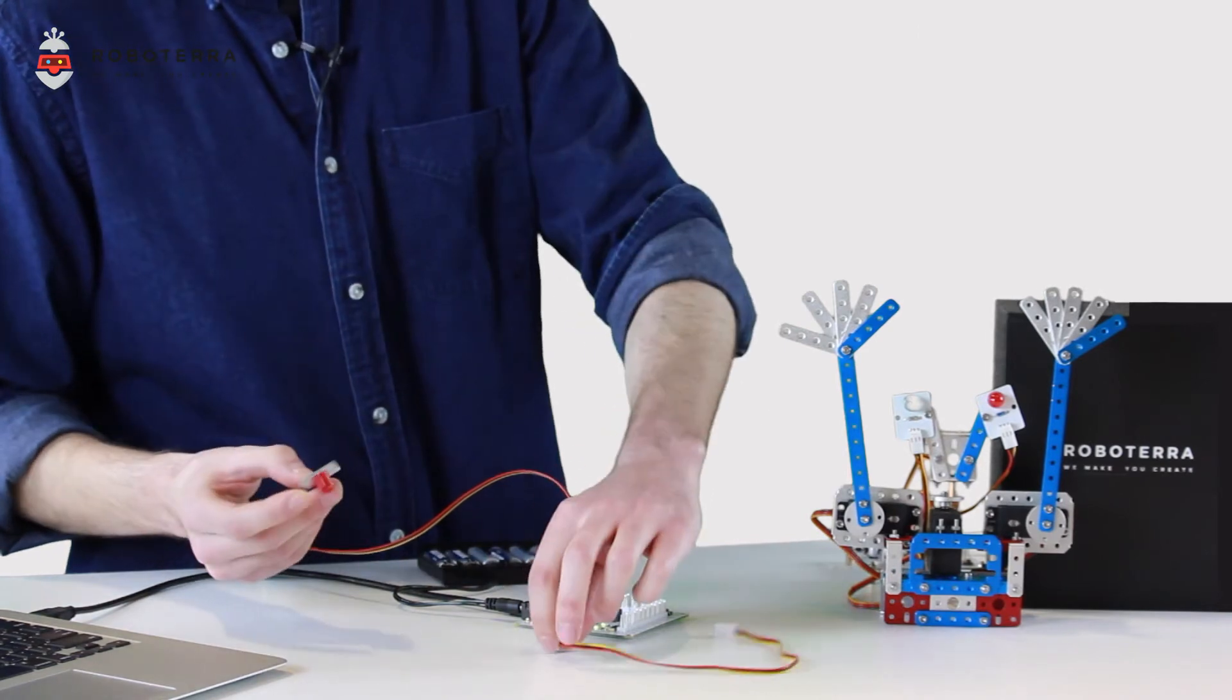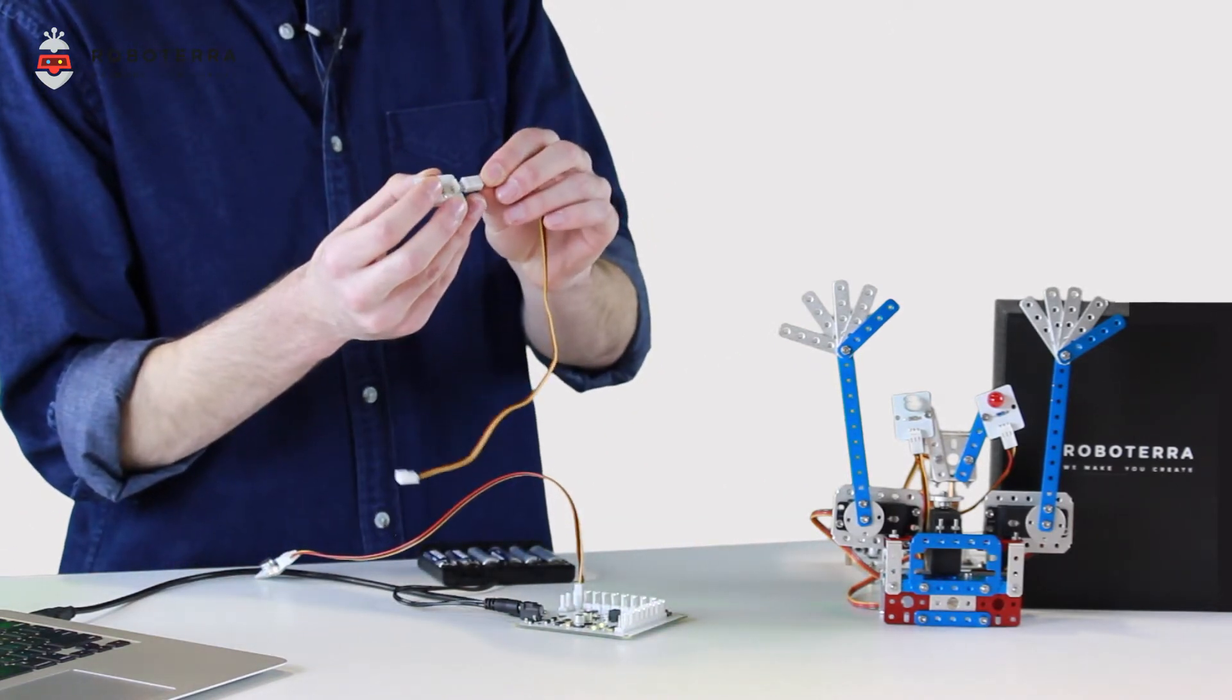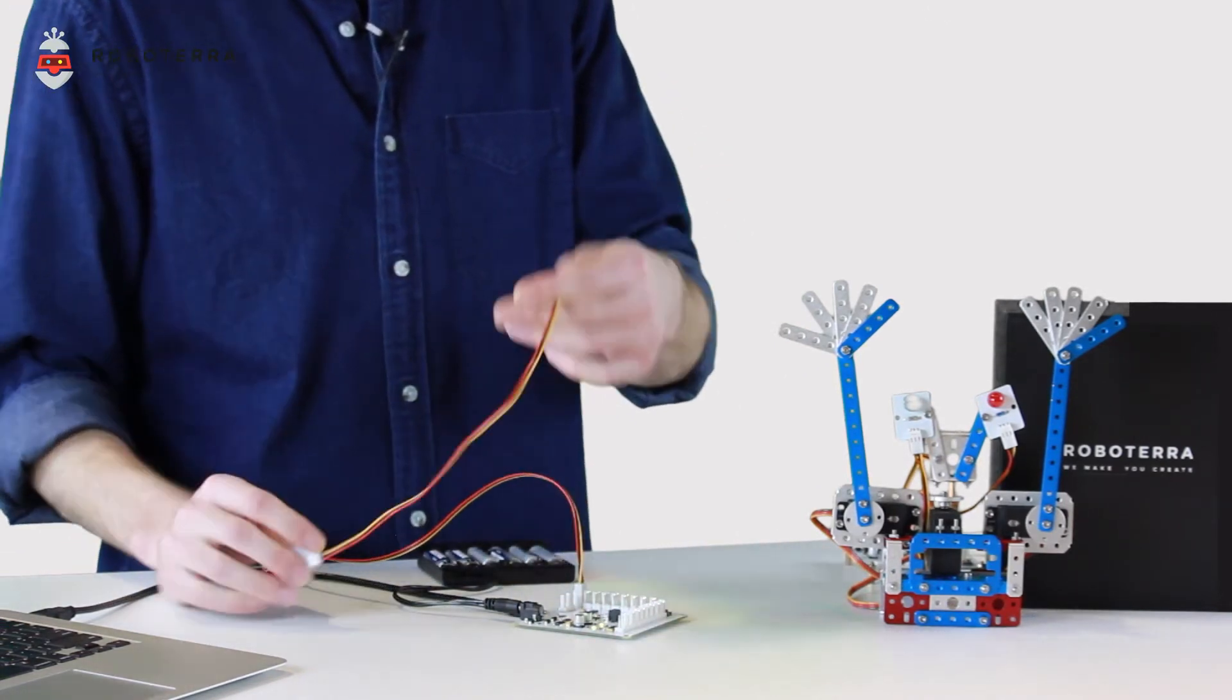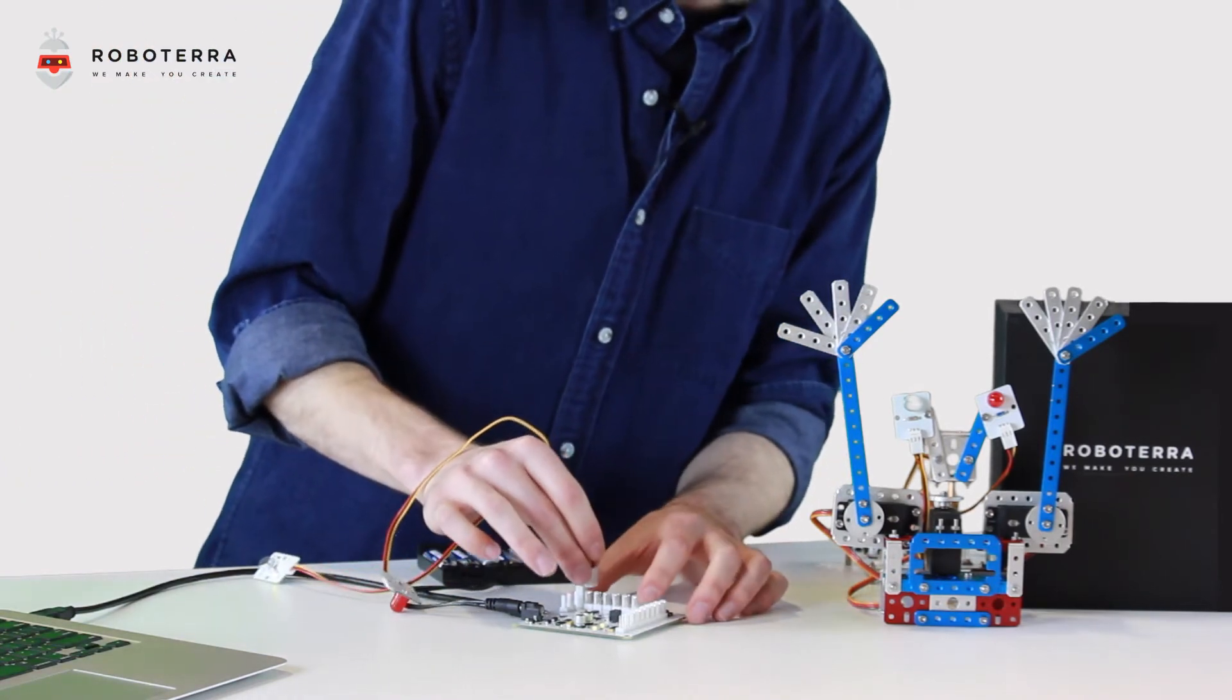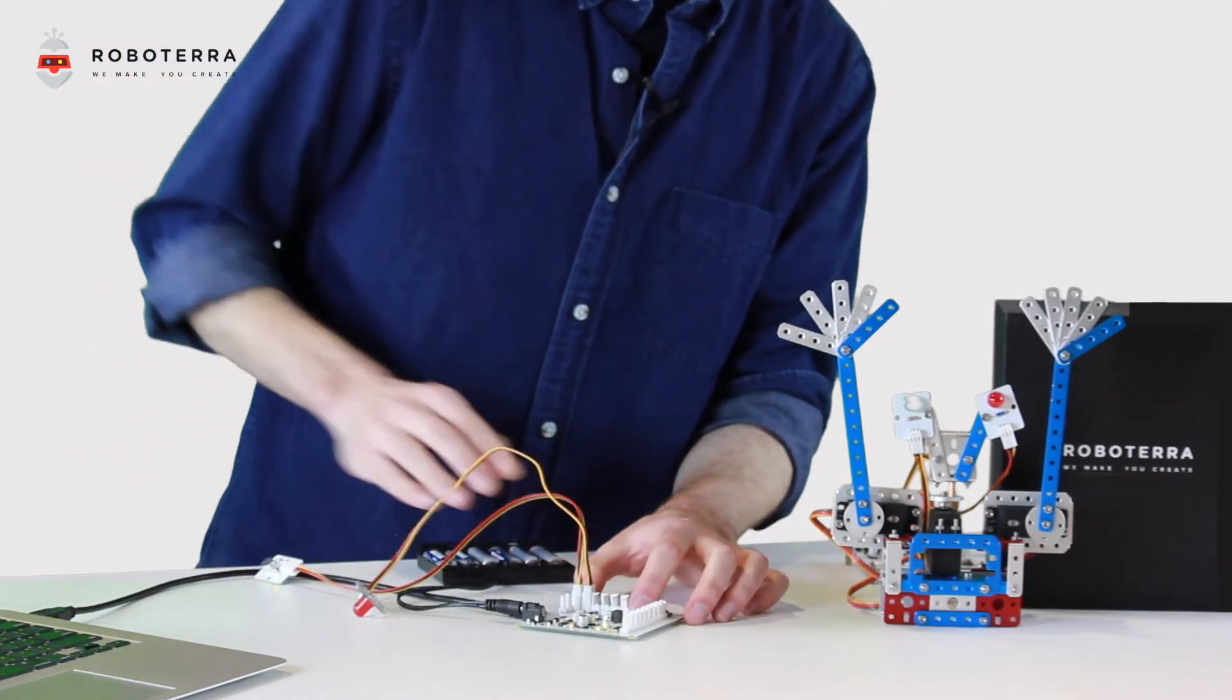Second, take my LED and do the same. Use a wire to connect it to RoboCore. This will go into port DIO2. Great.